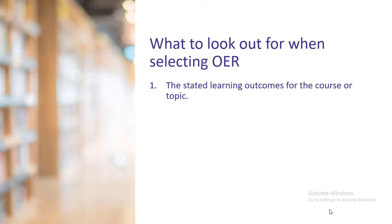At 90 to 100 percent suitability, you can say that the material is suitable for adoption. But if you are to adapt the OER material, the percentage level of suitability to the learning outcome should not be less than 60 percent. A higher value should be left for the original author of the content to be adapted.